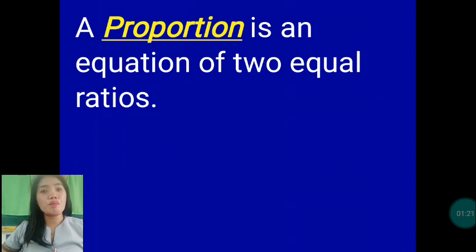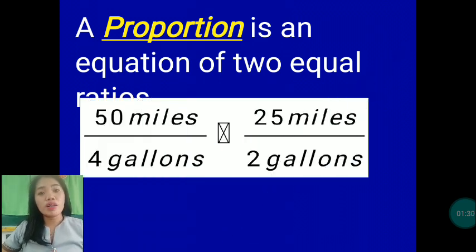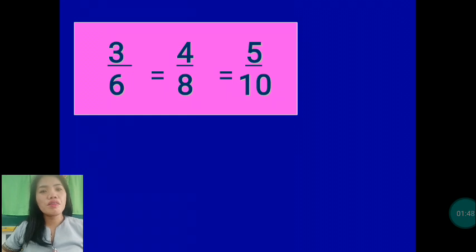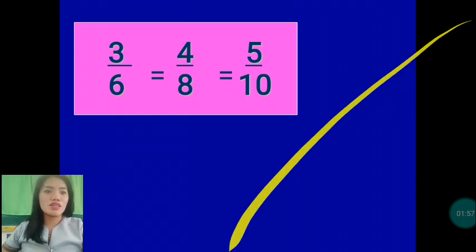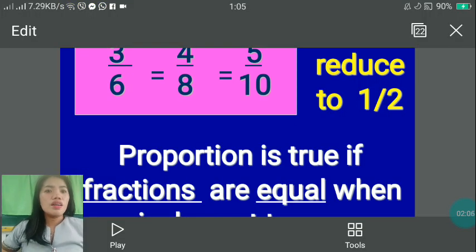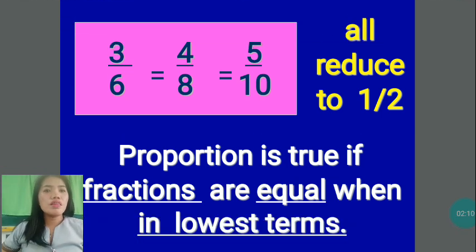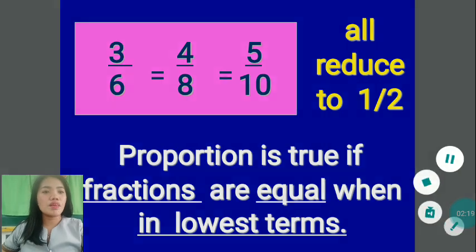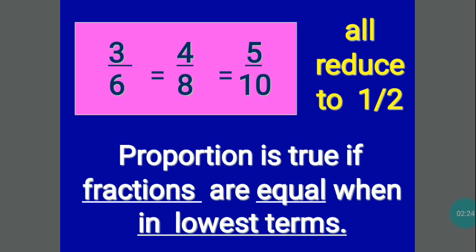Now let us proceed to proportion. A proportion is an equation of two equal ratios. For example, if you have 50 miles over 4 gallons is equal to 25 miles over 2 gallons — the symbol at the center is equal — that is a proportion. Another example: 3 over 6 is equal to 4 over 8 is equal to 5 over 10 — that is also a proportion. All of these can be reduced to one half. So a proportion is true if the fractions are equal when in lowest terms.